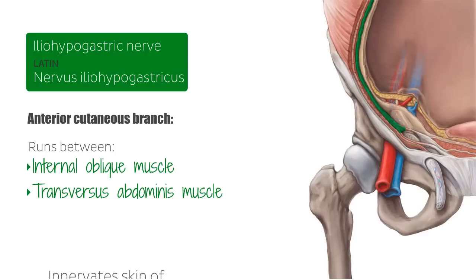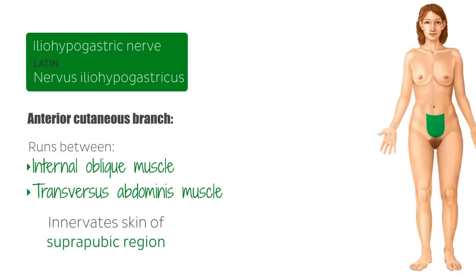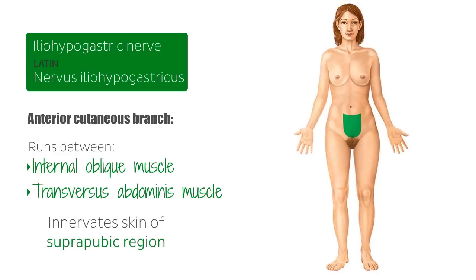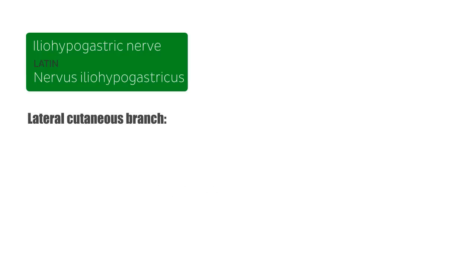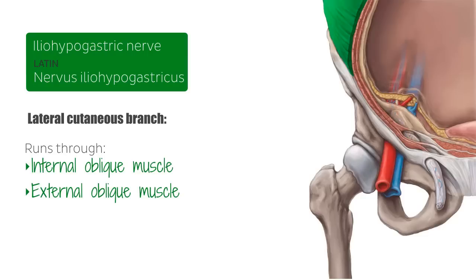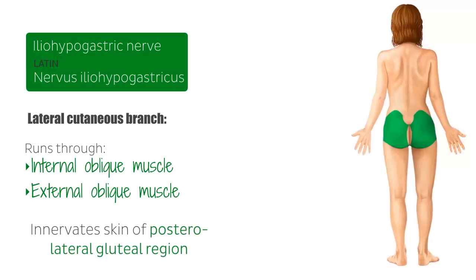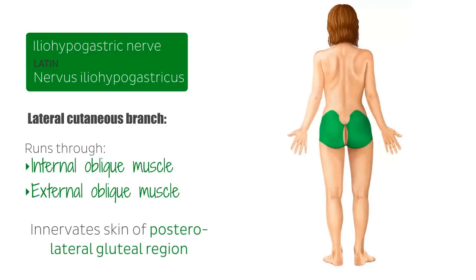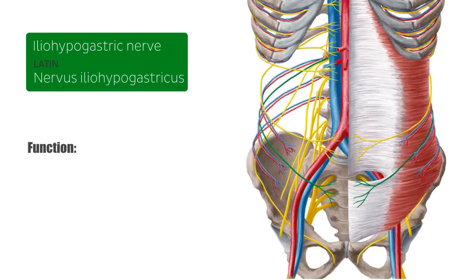The anterior cutaneous branch terminates by supplying the skin of the suprapubic region. The lateral cutaneous branch of the iliohypogastric nerve arises above the iliac crest and runs through the internal oblique muscle and the external oblique muscle, posterior to the iliac branch of the 12th thoracic spinal nerve, T12. This branch innervates the posterolateral gluteal skin, deep to the subcostal nerve.